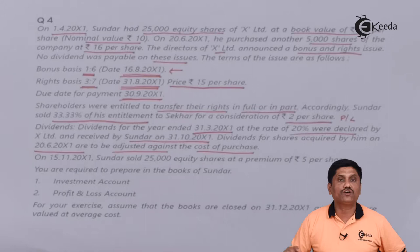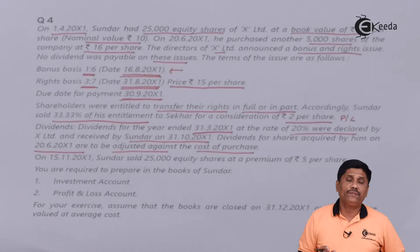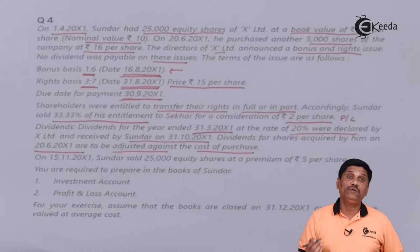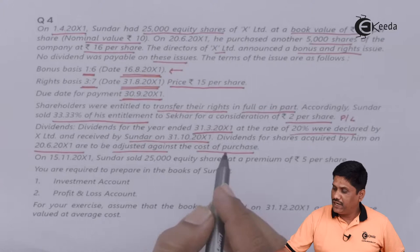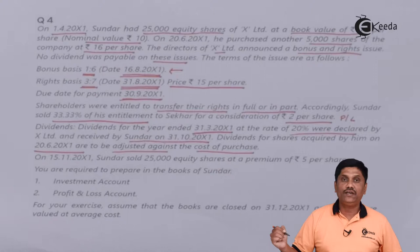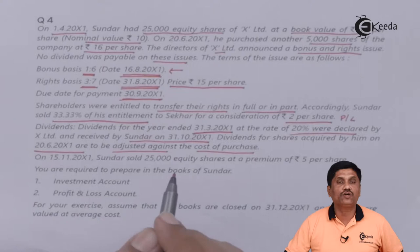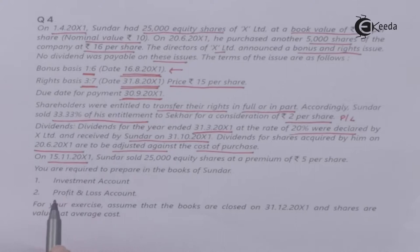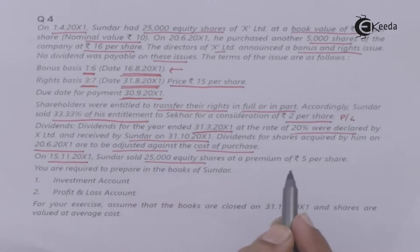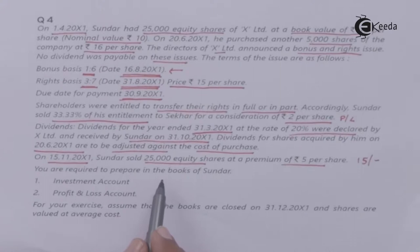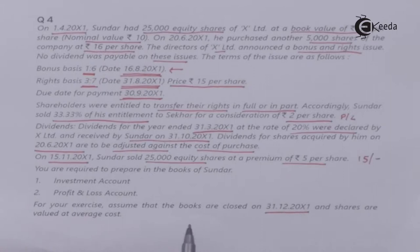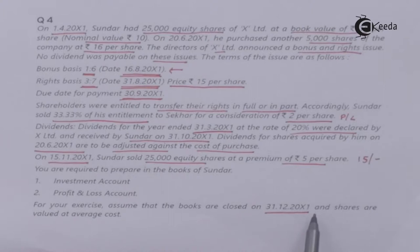This dividend will be credited in your cost column of the investment. On 15th November 200X1, Sundar sold 25,000 equity shares at a premium of Rs.5 per share — that means sold for Rs.15. You are required to prepare in the books of Sundar: investment account and profit and loss account for year ending 31st March 200X2.